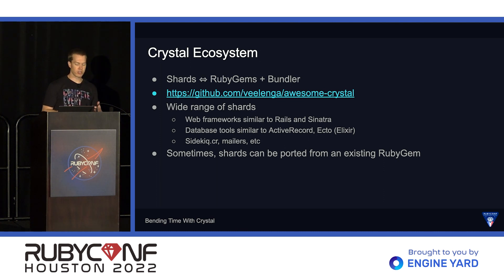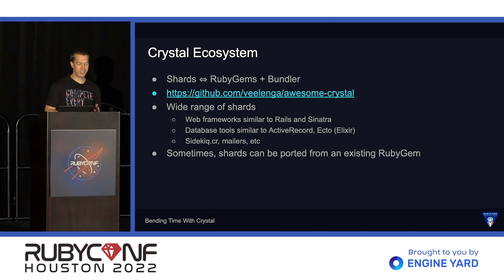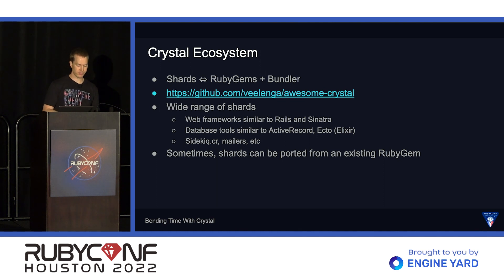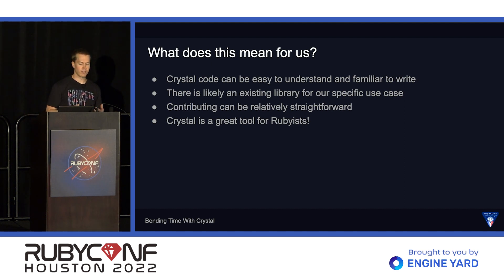A few years ago, I created a shard that was a port of ActiveSupport's Inflector module — the module that handles making words plural or singular, snake case, camel case, and a variety of other string manipulations. It was surprisingly easy to complete, with about 80% of the code directly copied and only the other 20% needing to be updated to work with Crystal. So Crystal code can be very easy to understand and feel very familiar to write, with likely an existing library for specific use cases.